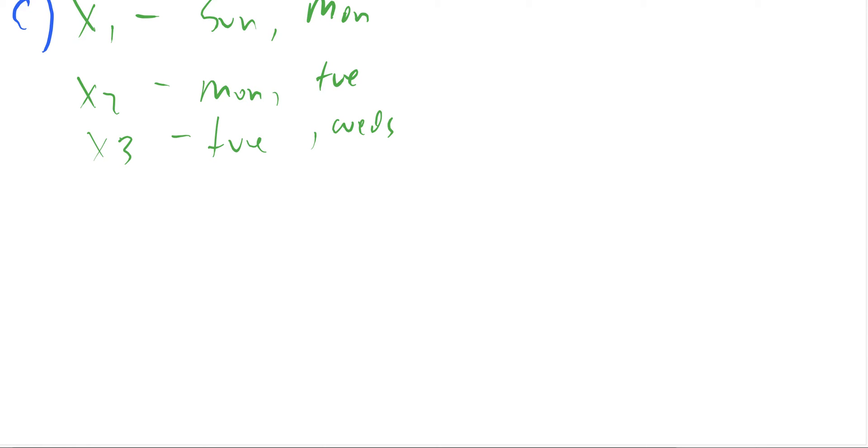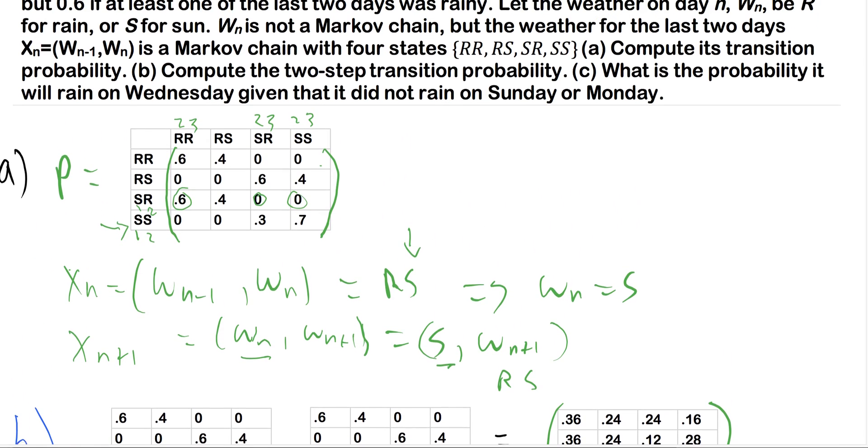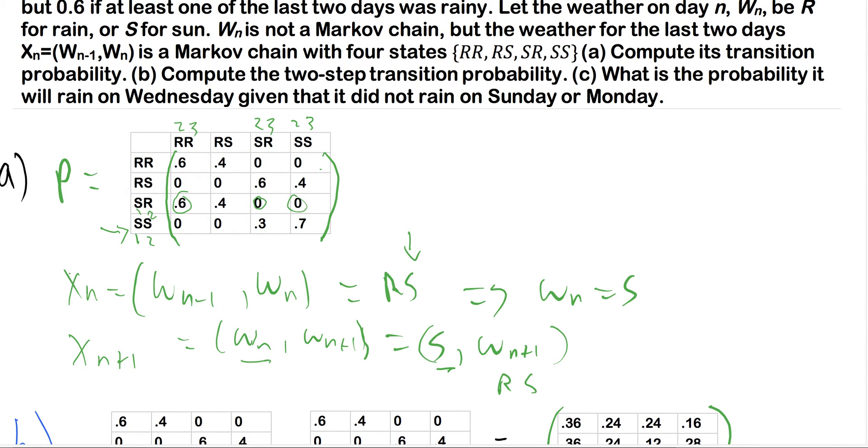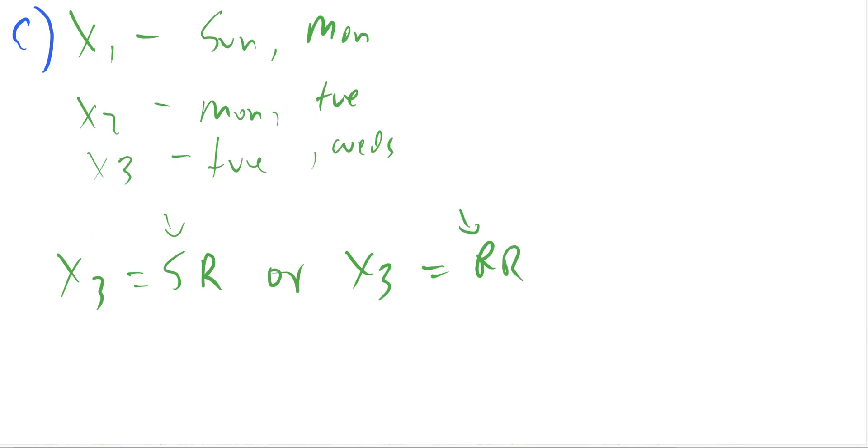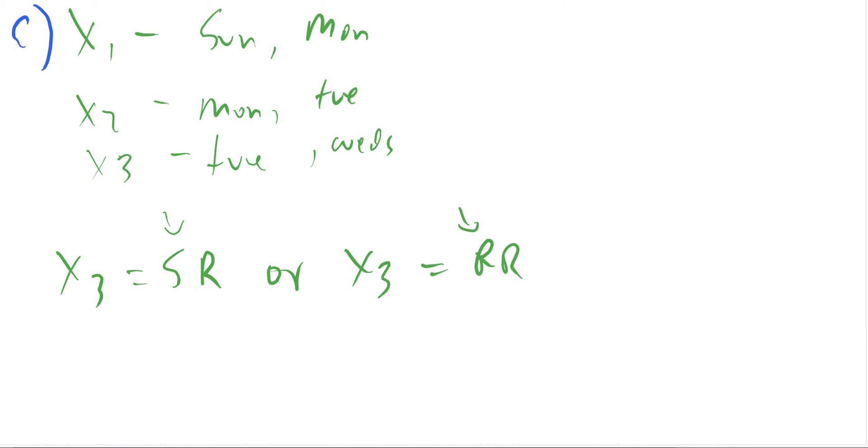So then it can rain on Wednesday, which means that X3 can be SR or X3 can be RR. Because we're not really fussed about what Tuesday is in this case, because we've only been given information in the problem. What is the probability it will rain on Wednesday given that it did not rain Sunday or Monday? It says nothing about Tuesday. So Tuesday can be either or, but we know that our Wednesday here has to be raining.